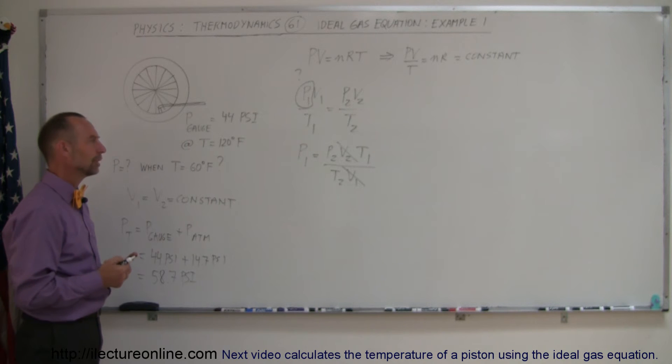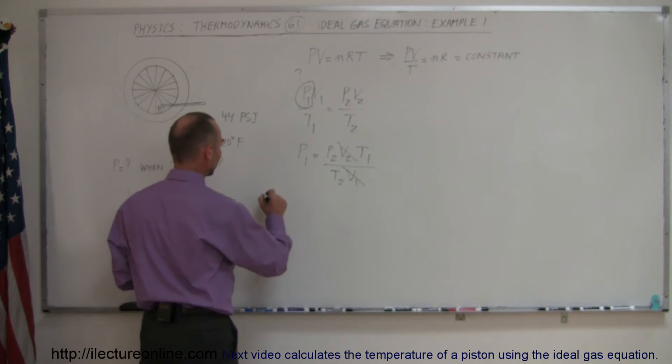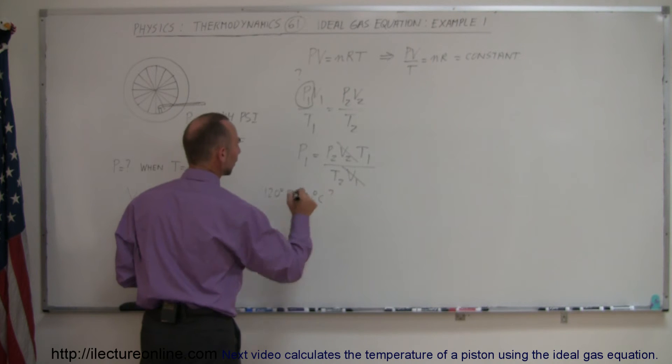Secondly, we have to convert the temperature to Kelvin. So first of all, 120 degrees Fahrenheit is how much in degrees centigrade?